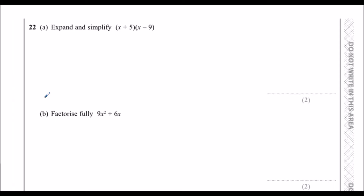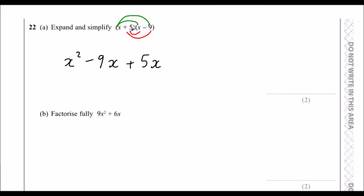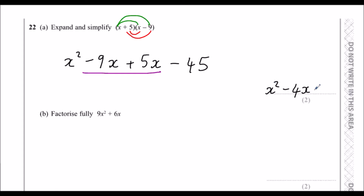Question 22 part a: expand and simplify (x + 5)(x − 9). We multiply both terms in the first bracket by both terms in the second: x times x is x², x times −9 is −9x, 5 times x is 5x, and 5 times −9 is −45. Collecting like terms: −9x plus 5x is −4x. The answer is x² − 4x − 45.